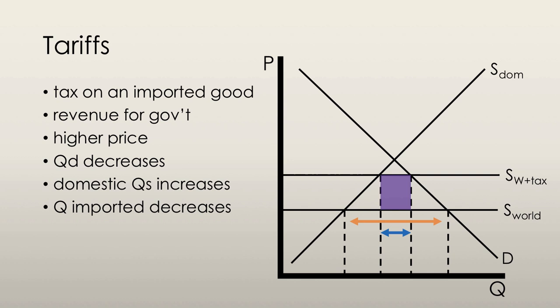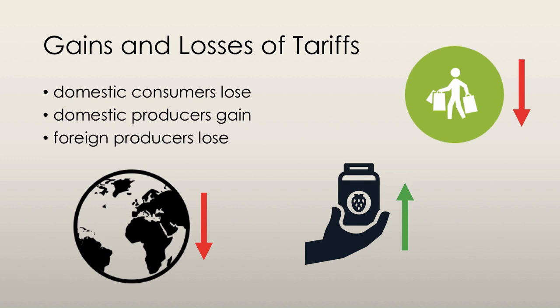Government revenue is calculated as the quantity imported multiplied by the tax charge per unit imported. When we talk about gains and losses, we're going to look at the changes in the prices and quantities in the market.